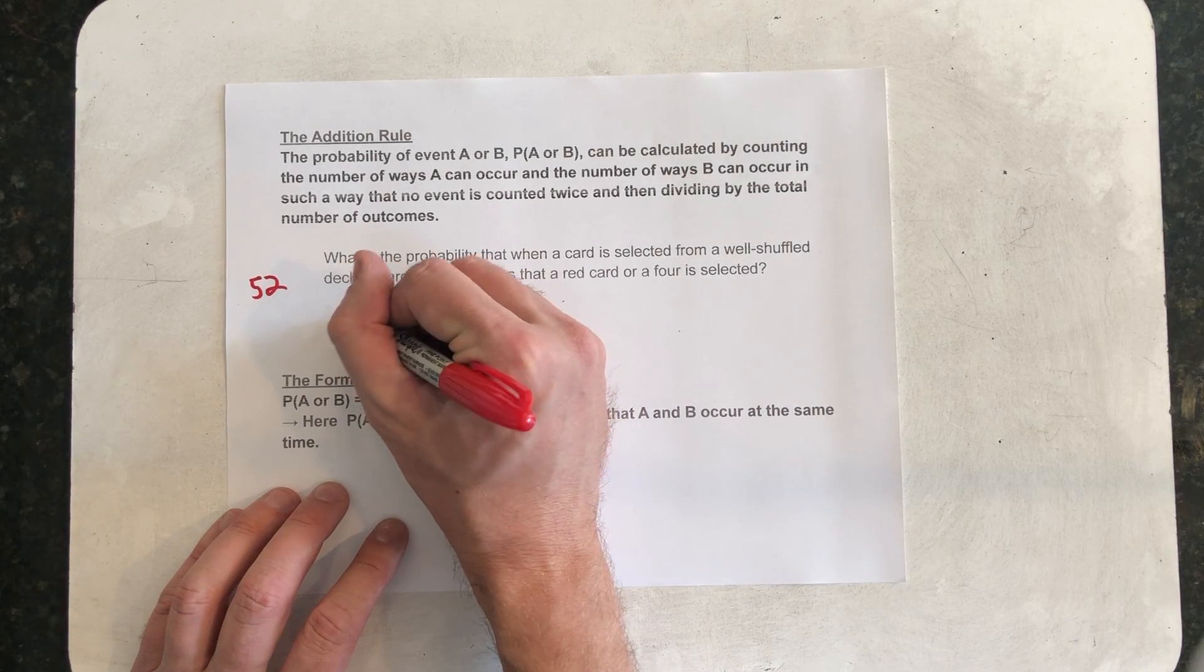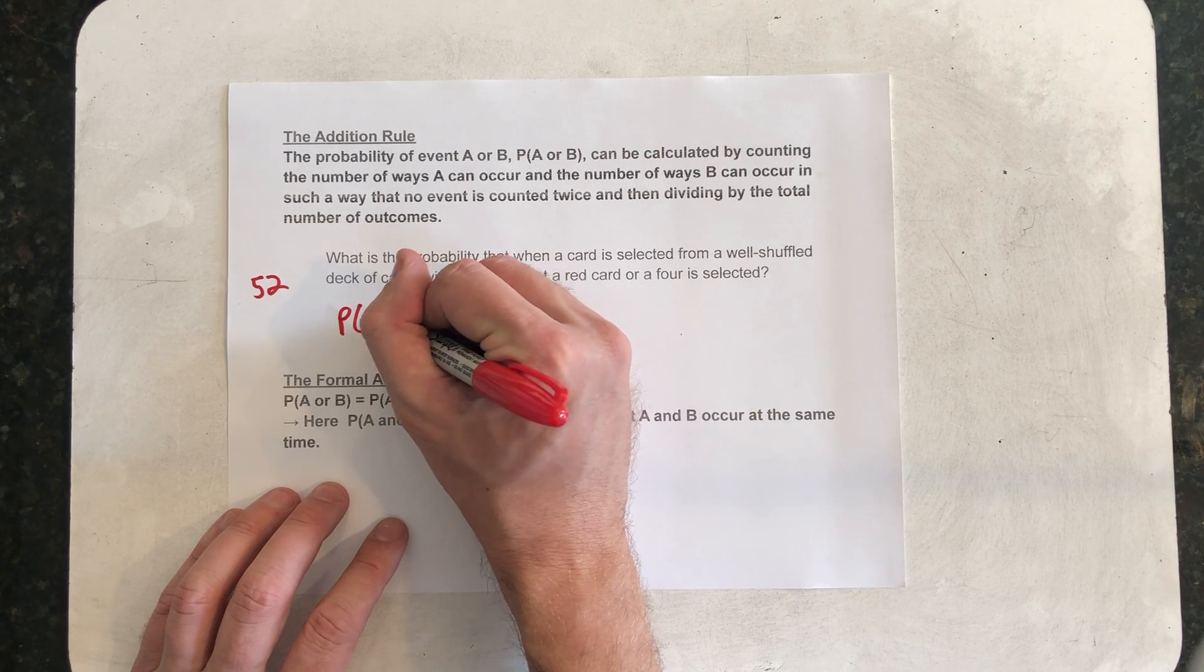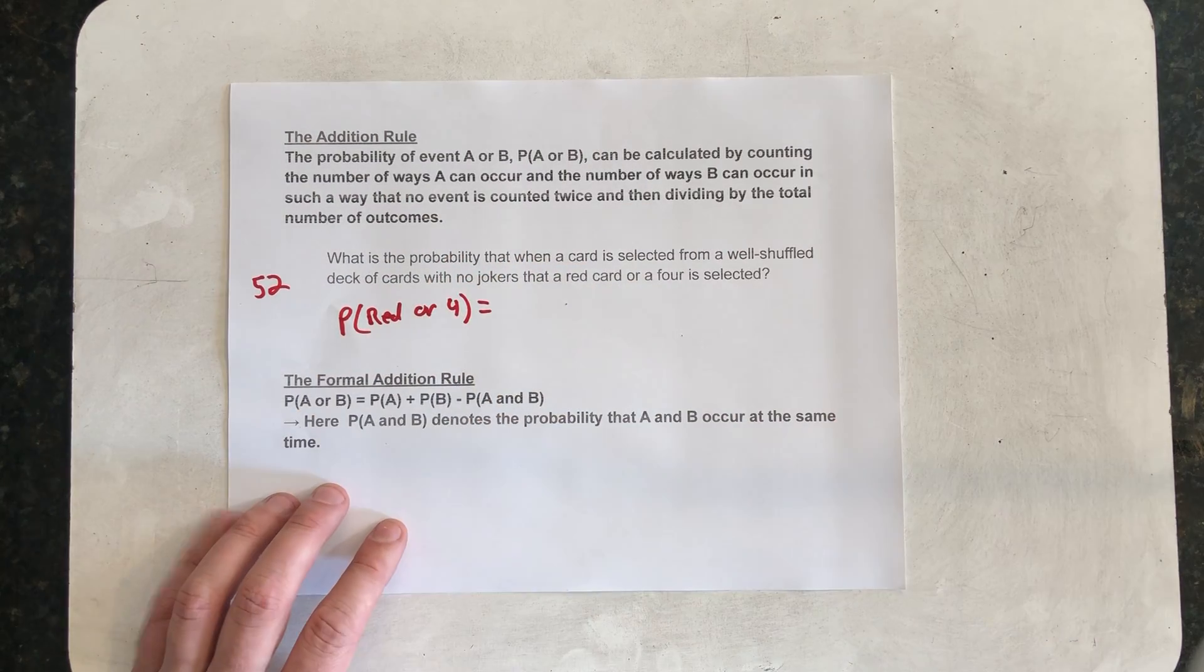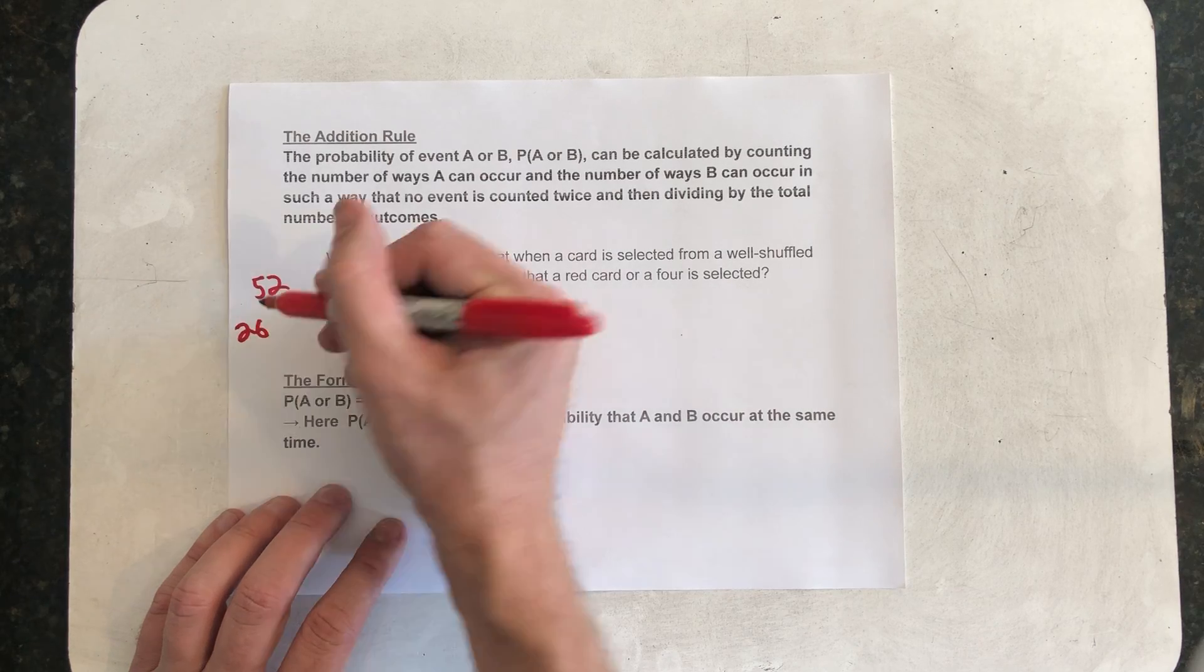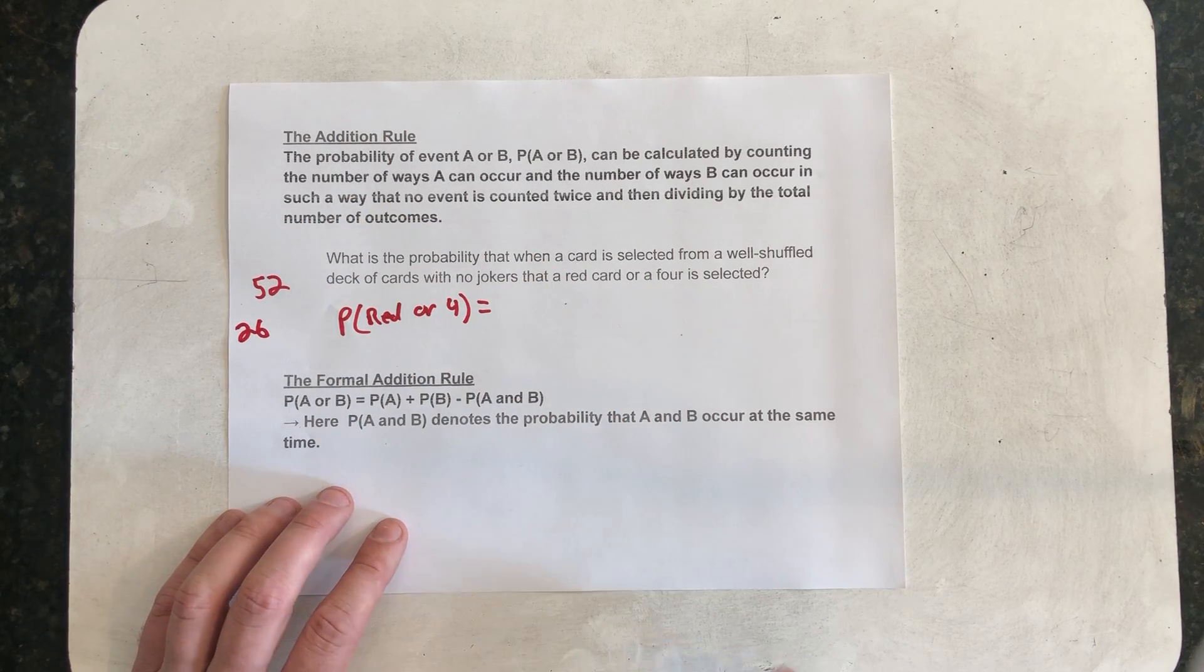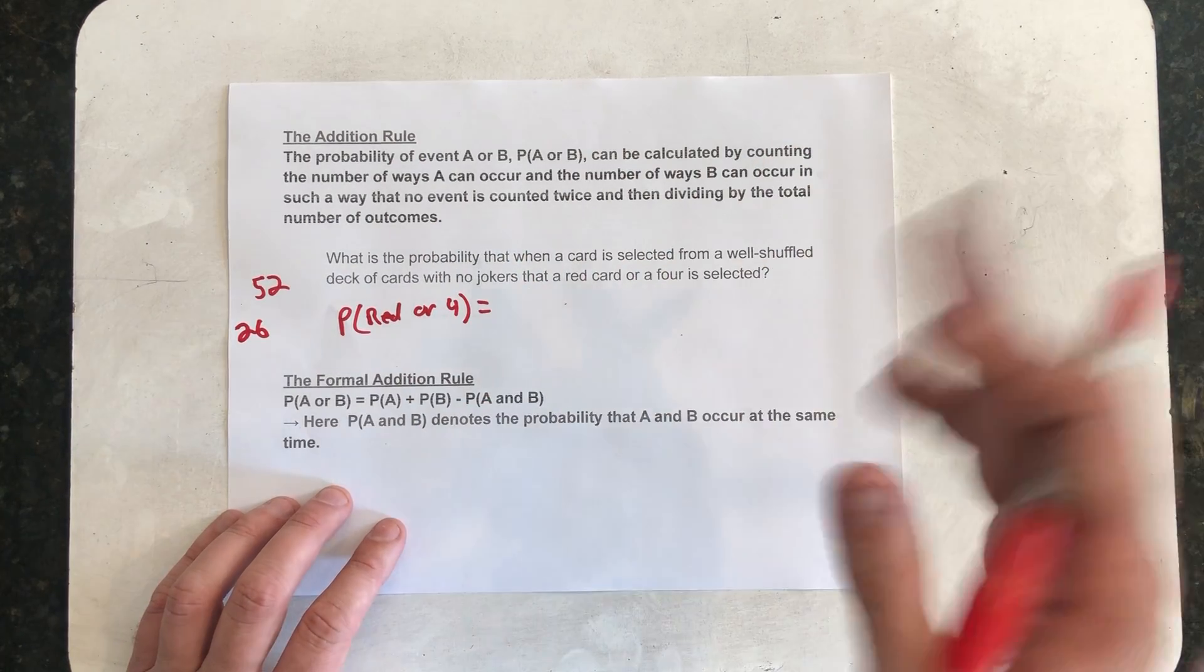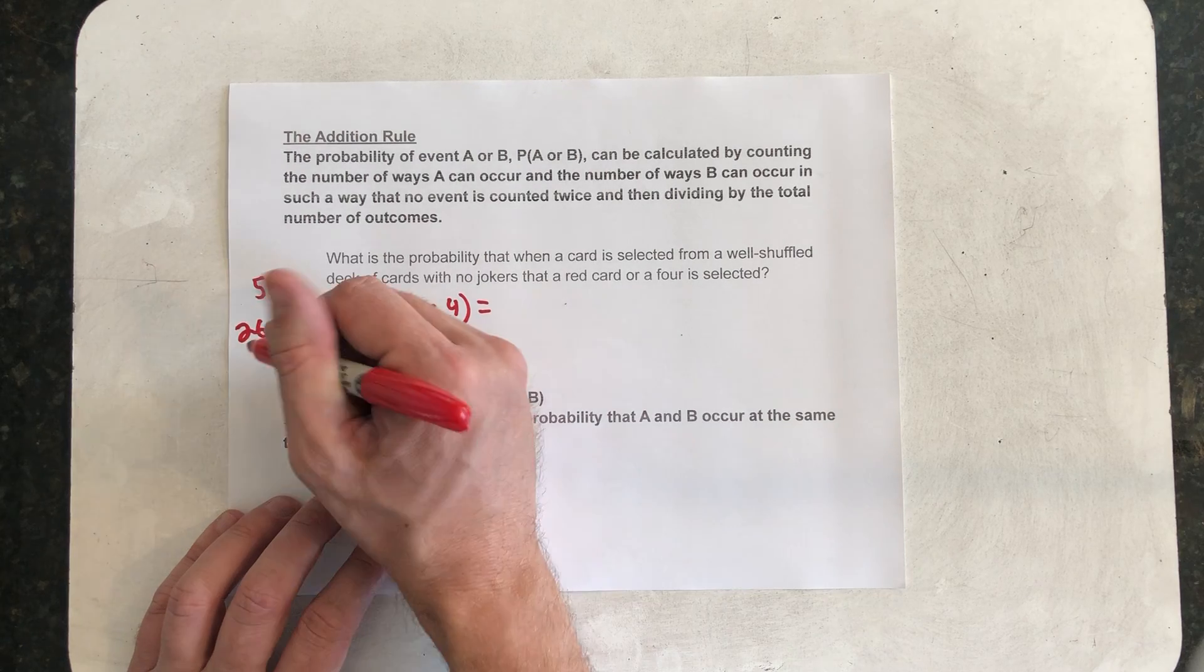So, if I want to know the probability of a red card or a 4, I need to know how many red cards there are. Well, there are 26. And I need to know how many 4s there are. Well, it wouldn't matter if it said 3 or 10. They're the same number of all the numbered cards. There's one in each suit, so there are 4 altogether.